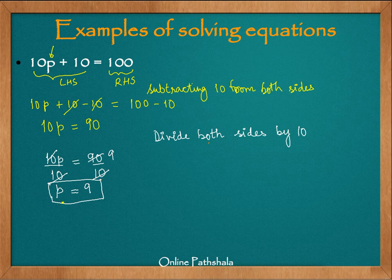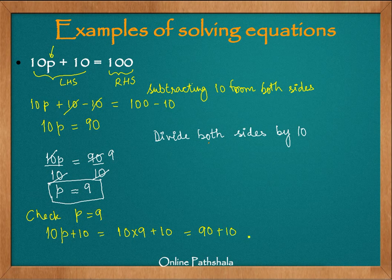Now this p equals 9 is the solution to our equation and we would like to check the solution whether p equals 9 solves the problem or not. So we substitute p equals 9 in our left hand side which is 10p plus 10 which is equal to 10 into 9 plus 10 which goes out to be 90 plus 10 and then finally it comes out to be 100.